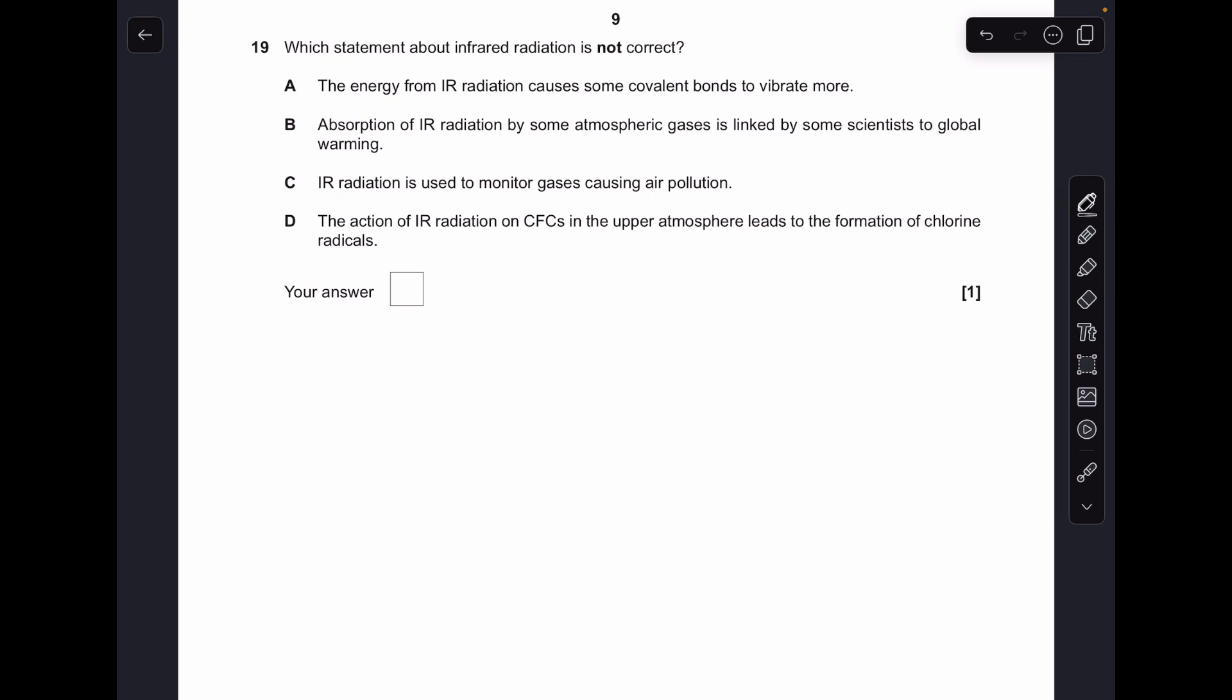Number 19, so which statement about IR radiation is not correct? So A is correct because yeah, infrared radiation does cause some covalent bonds to vibrate more. B is correct. B is correct, IR radiation is linked to global warming. C, infrared radiation is used to monitor gases because they use infrared spectrometers to monitor air pollution. So it must be D, and it is because it's UV that causes the CFCs to break into chlorine radicals.